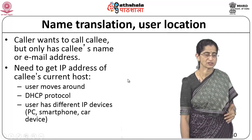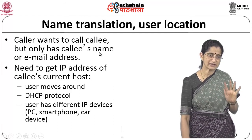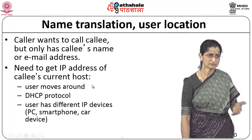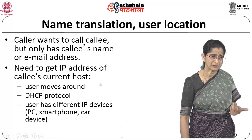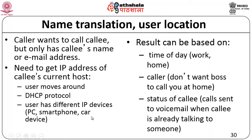For name translation and user location, the caller may only have the colleague's name or email address and needs to get the current IP address. This is needed because the user may move around and get a new IP address via DHCP, or the user may have different IP devices — PC, smartphone, car device. Additionally, call handling can be based on factors like time of day, whether the caller is the boss, or the colleague's current status (e.g., redirecting to voicemail when already on a call).